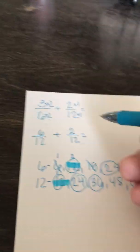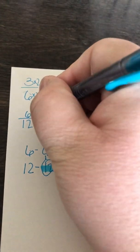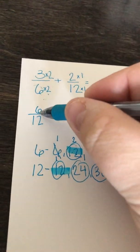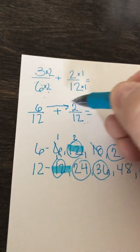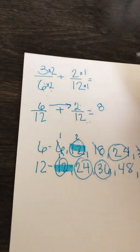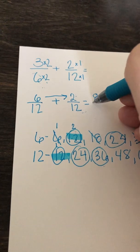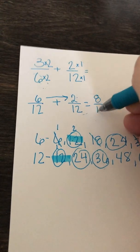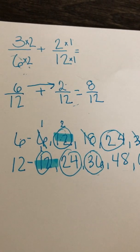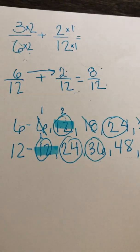We can add. What we do with the same denominator is we add across with the numerators. 6 plus 2 is 8. And if the denominators are the same, the denominator stays the same. So the answer would be 8 twelfths.